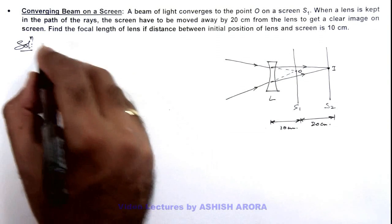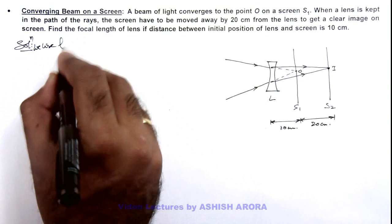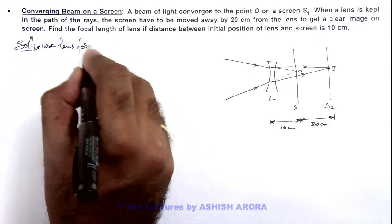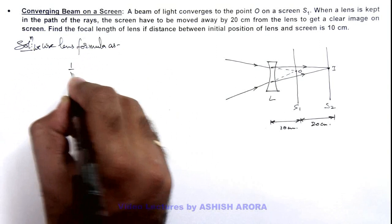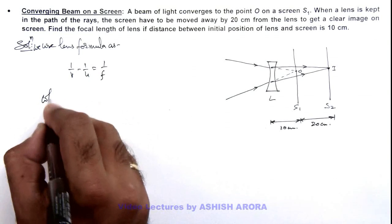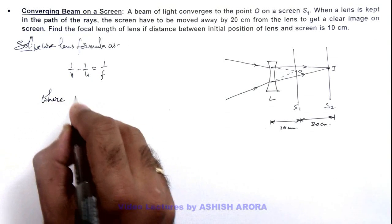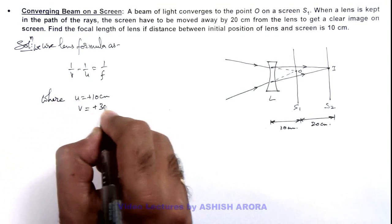We can use the lens formula: 1/v - 1/u = 1/f, where u equals plus 10 centimeters and v equals plus 30 centimeters.